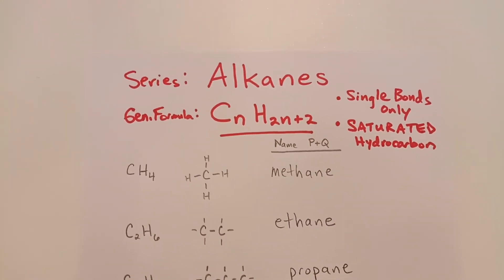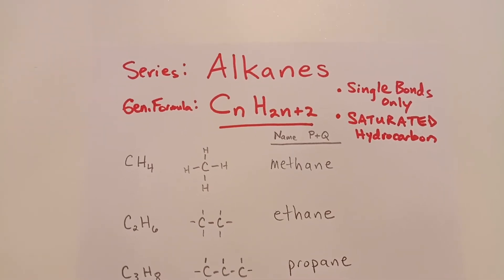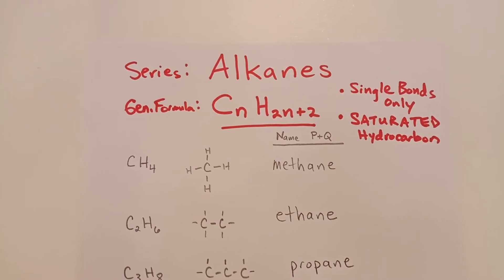Then we have C2H6. I've left off the hydrogens, but they're understood to be at the end of each of these single bonds. And that's ethane, C2H6.